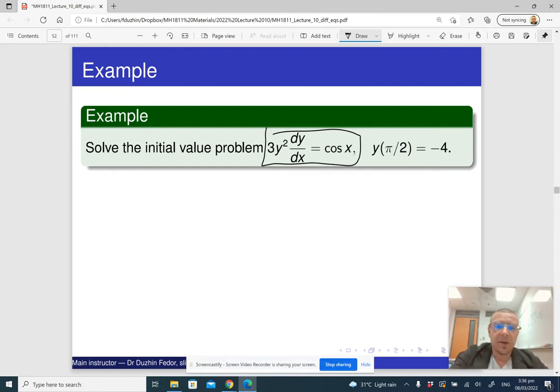So separating the variables, I'm going to get 3Y squared DY equals cosine X DX. Then I'm going to integrate, and integrating, I will get Y cubed equals sine X plus C.